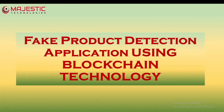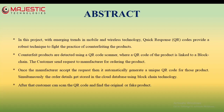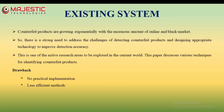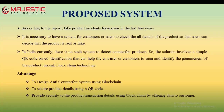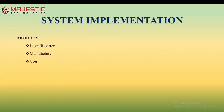This is a fake product detection application using blockchain technology. The project is a mobile application for fake product detection based on QR code. Nowadays, fake product incidents have risen in the last few years, so our proposed system gives a solution that involves a QR code based identification that can help the end user or customer to scan and identify the genuineness of the product through blockchain technology.